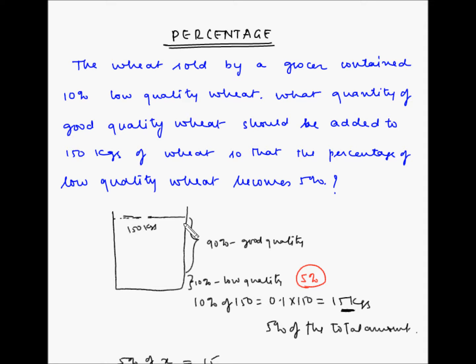the total amount of wheat has to double up. So the double of 150 kgs is 300 kgs. So this is a quick way of solving this example.